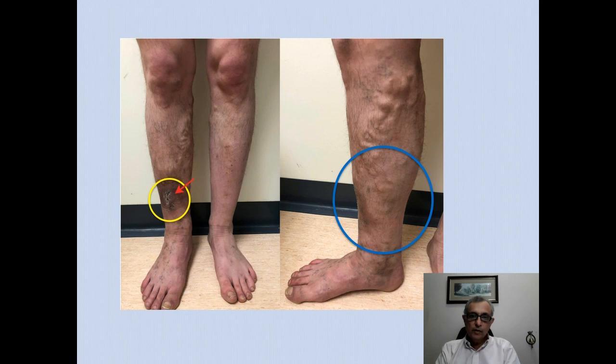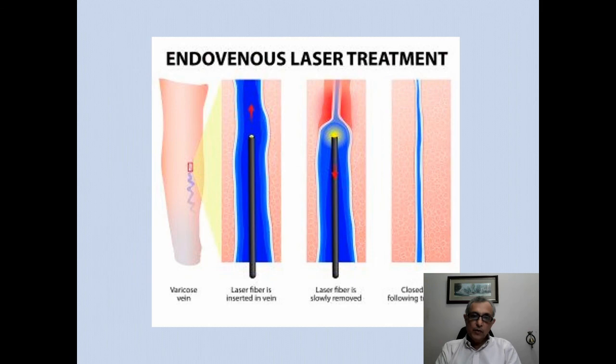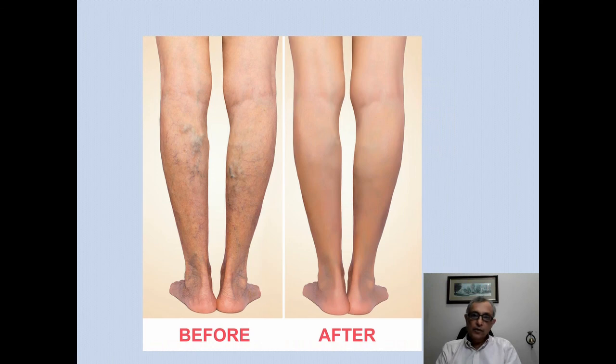Varicose veins are a very common problem — they can result in ulceration and tortuous deforming veins in the legs. Treatment involves inserting a laser fiber from the ankle, delivering energy to ablate the inner lining of the varicose veins, and slowly pulling the catheter so the vein occludes. Pre-treatment images show varicose veins and spider veins; post-treatment shows significant regression.